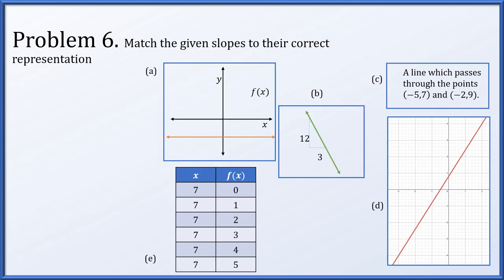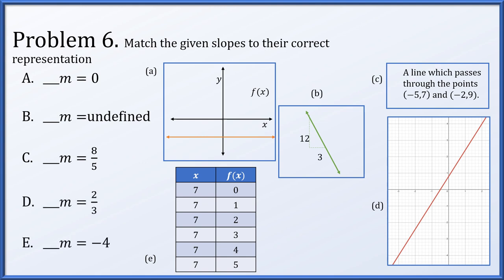Problem six: match the given slopes to their correct representation. For graph a, we have a horizontal line, meaning slope is zero — that's capital A. For representation b, the line goes over three units while going down 12, so delta y is negative 12 and delta x is three, giving slope of negative four — capital E. For representation c, two given points have coordinates with delta x of negative three and delta y of negative two, giving slope of two thirds — capital D.